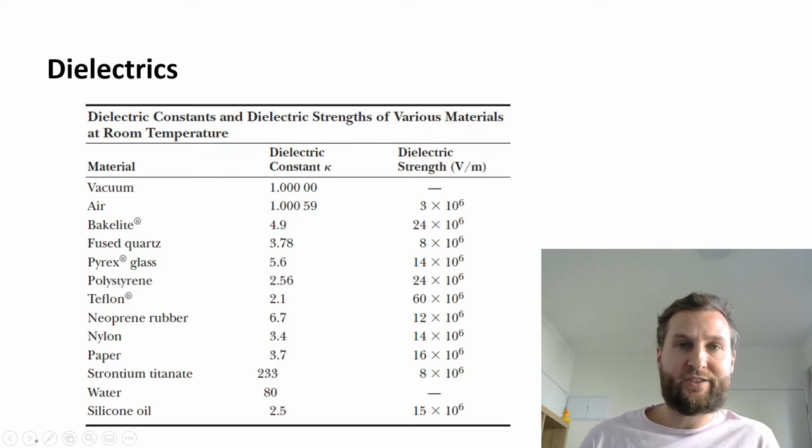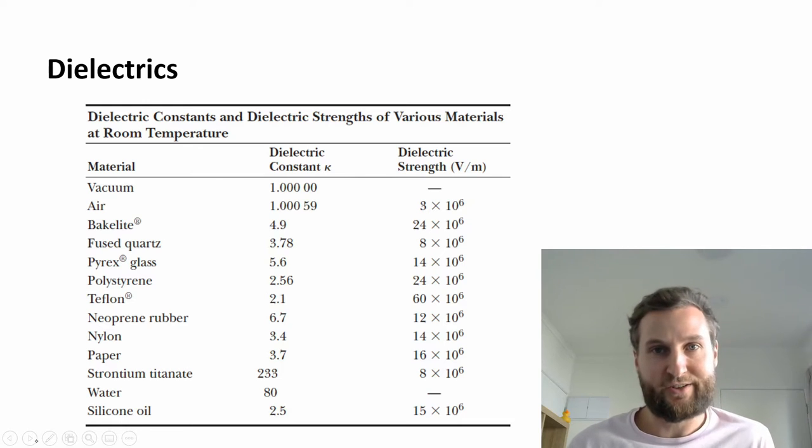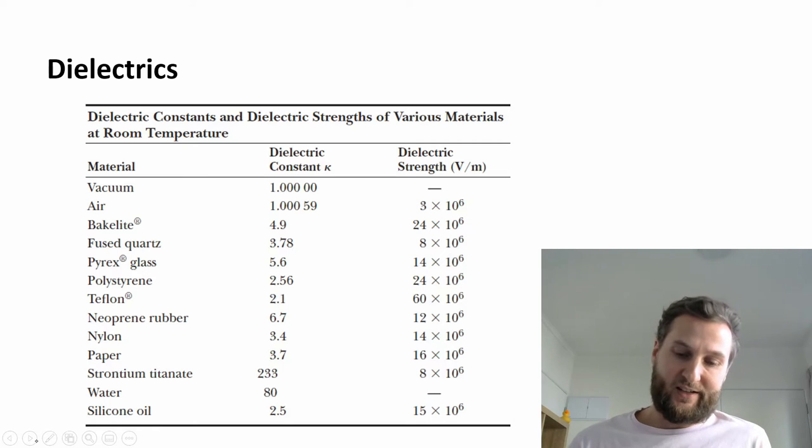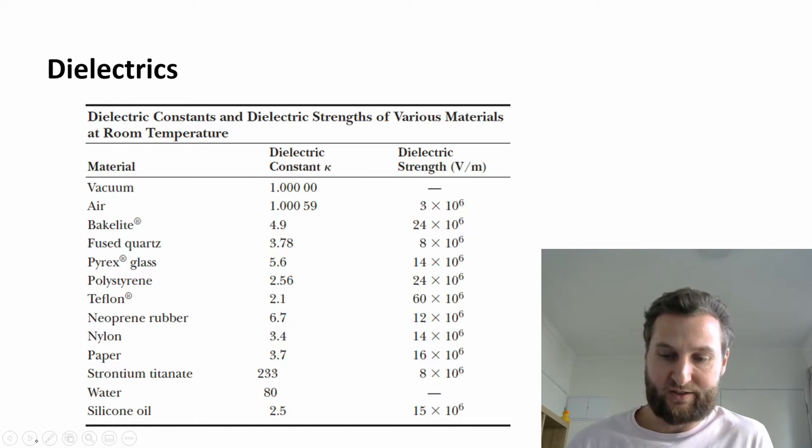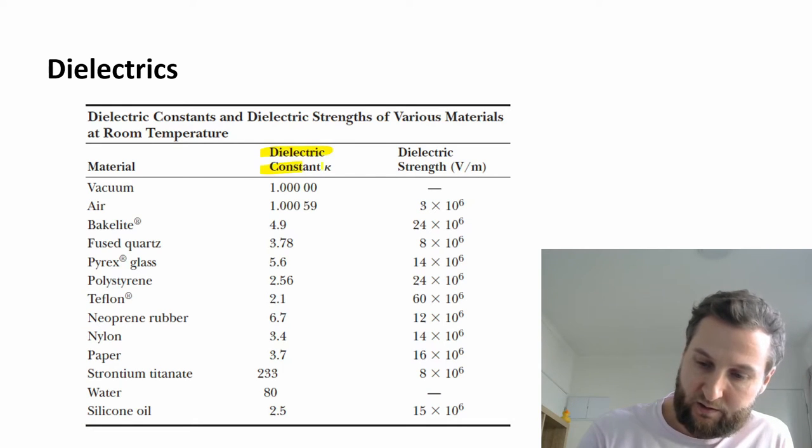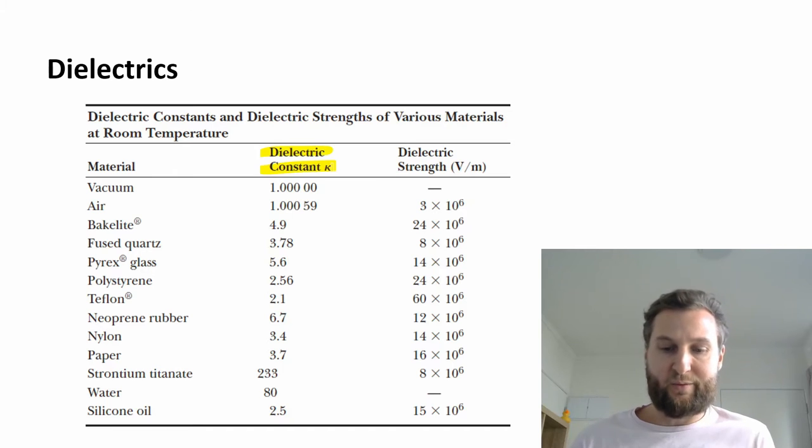We have a table here of dielectrics. These things are not calculated or determined mathematically from first principles. You have to create a material and go out and test it. So this is done in a lab. This dielectric constant factor, kappa, you can see in this column here.